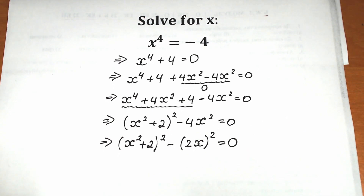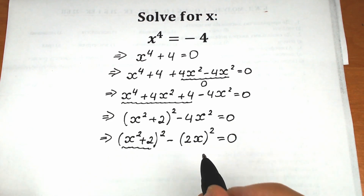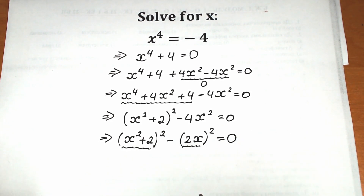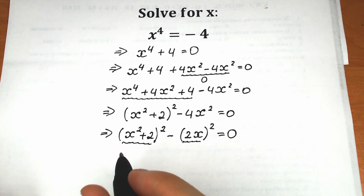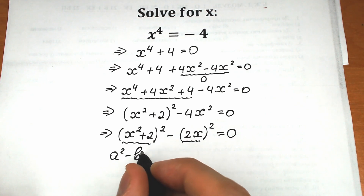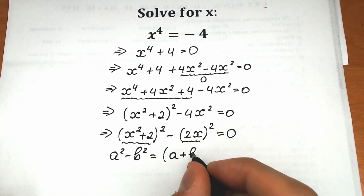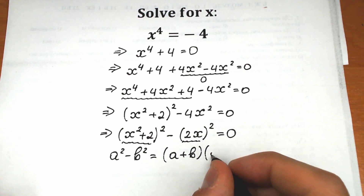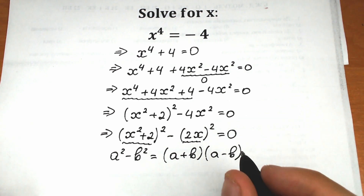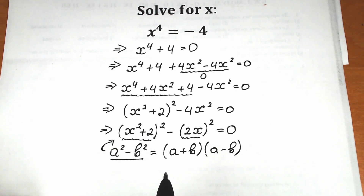This is our school identity: a squared minus b squared equals (a plus b)(a minus b). Let's apply this formula here where a is (x squared plus 2) and b is 2x.